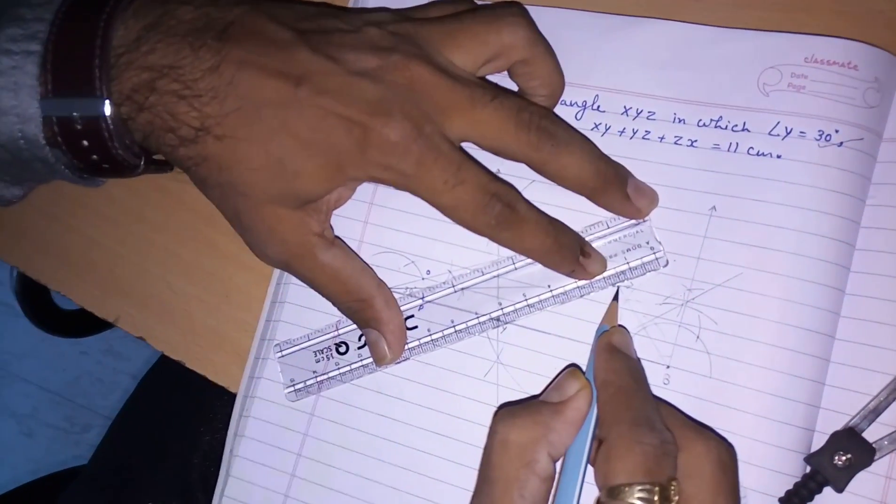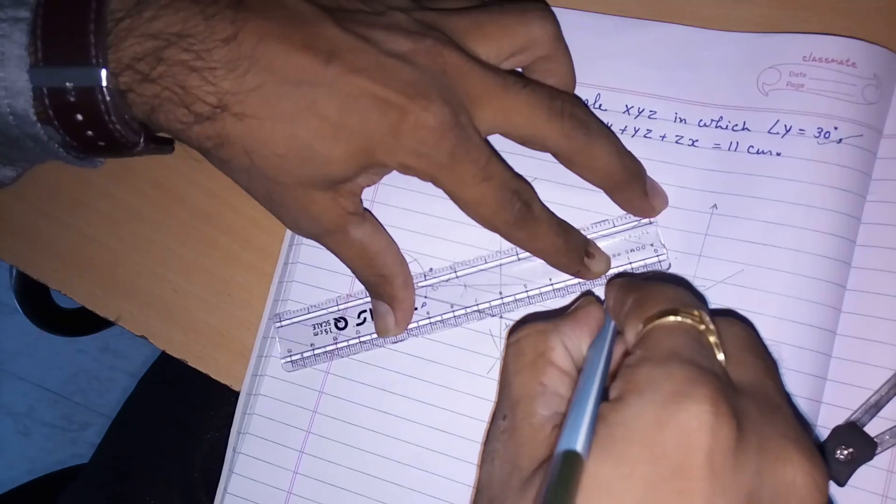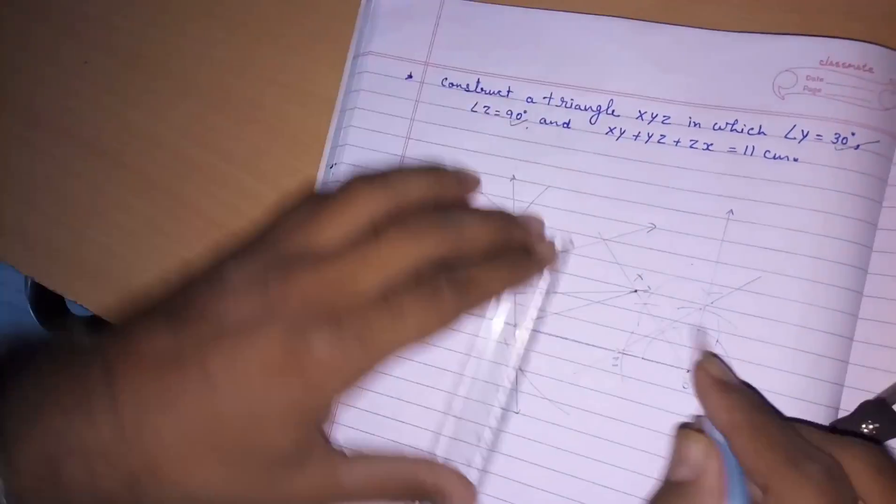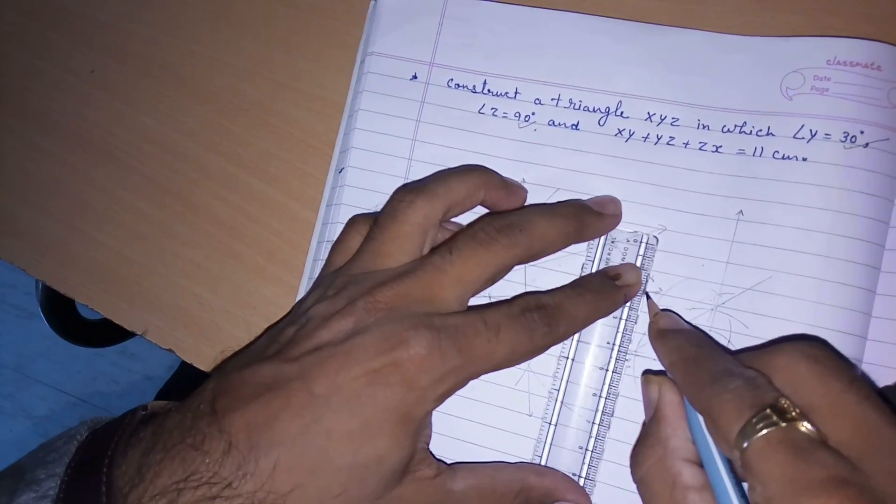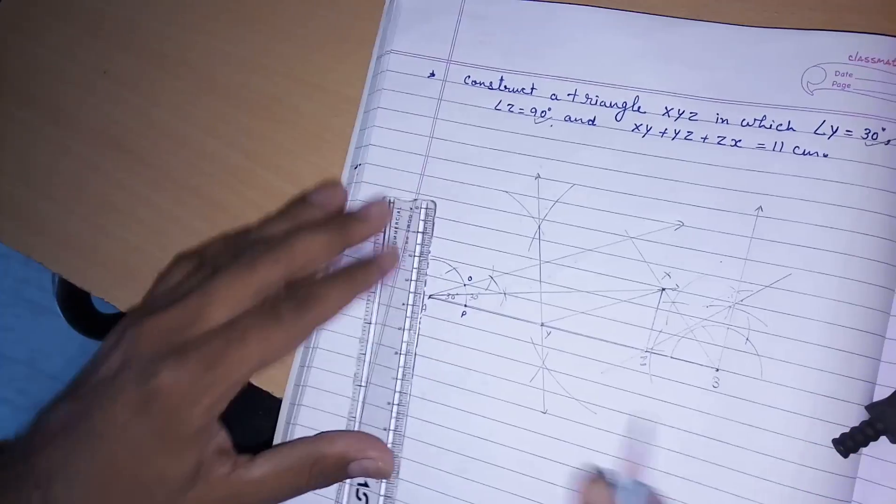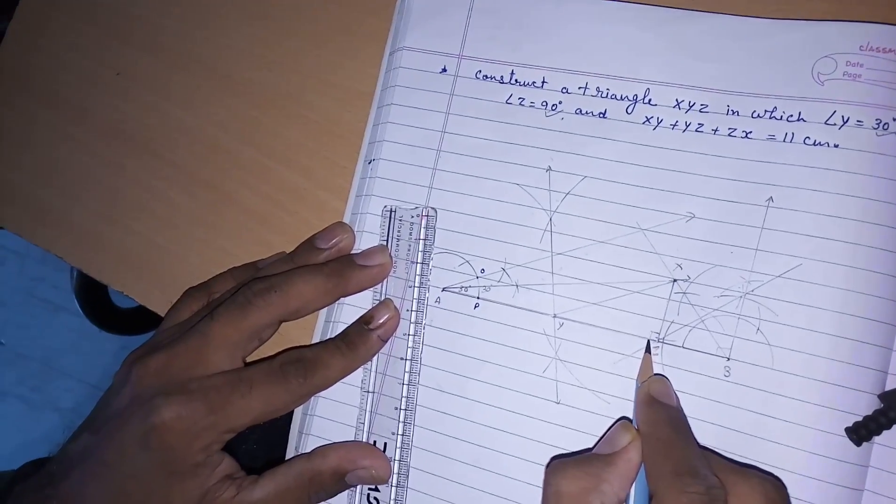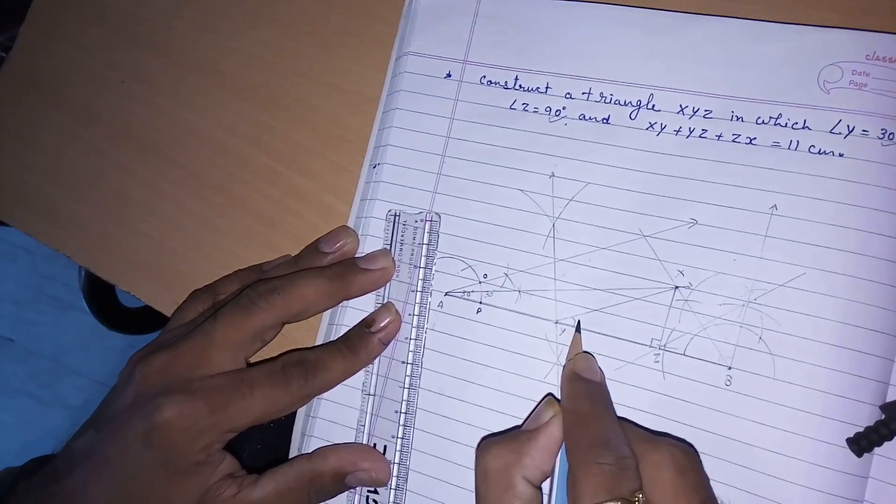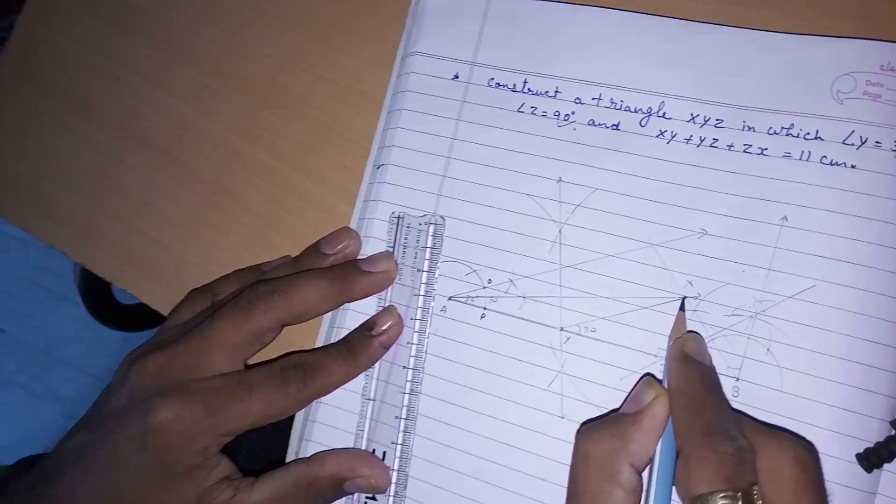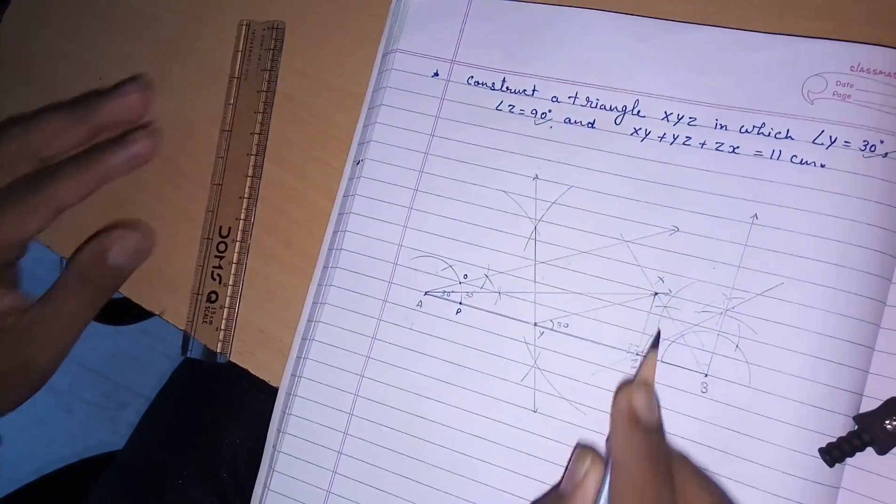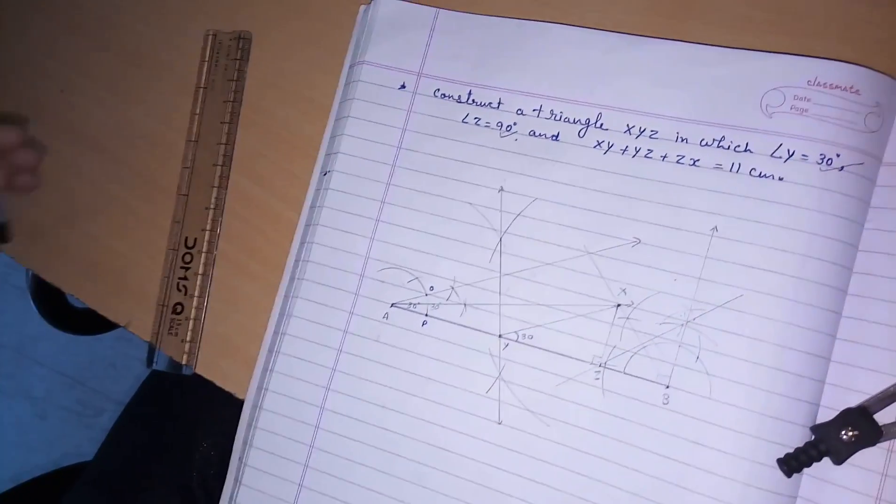Now, our required triangle is X. Join X, Y and Z. If you want to measure, you can measure it will be 90 degrees and it will be 30 degrees. So, this is our required triangle X, Y, Z. Thank you everyone.